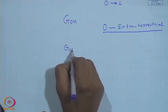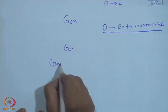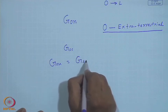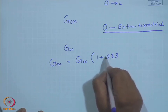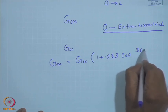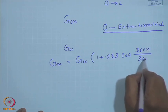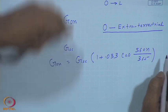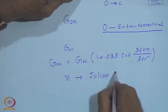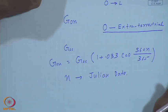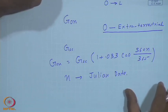G_SC is the solar constant, for a surface at the mean sun-to-Earth distance. On any given day, that will vary as G_SC times (1 + 0.033 cos(360n/365)), where n is the so-called day of the year, also called Julian date. January 1 is counted as 1, and December 31st will be 365.